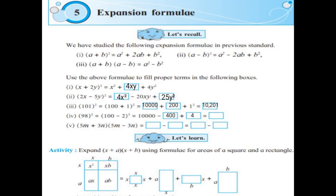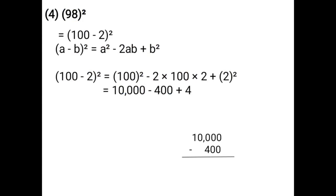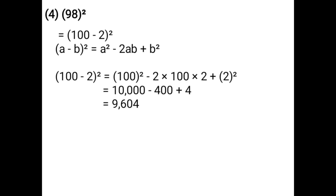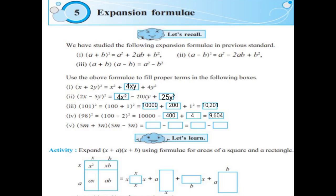Square of 100 is 10,000. Then 2 × 100 × 2 = 400, so −400. Plus square of 2 is +4. First subtract 10,000 − 400: borrowing through the zeros gives 9,600. Then add 9,600 + 4 = 9,604. The correct answer in the box is 9,604.